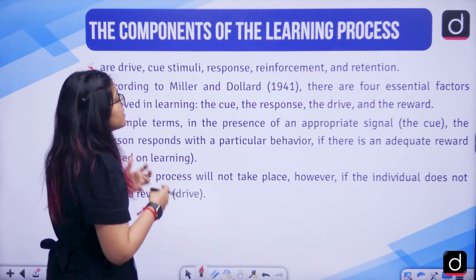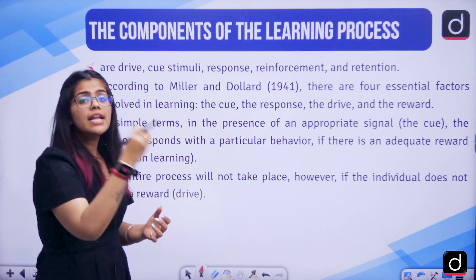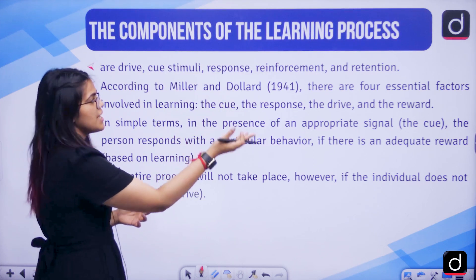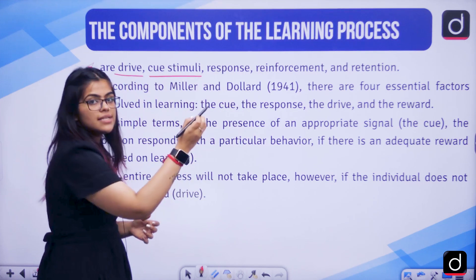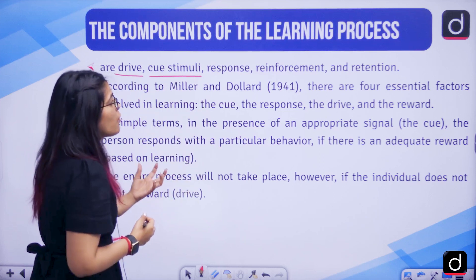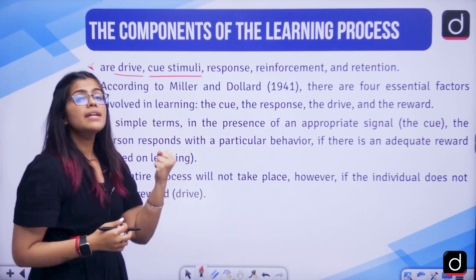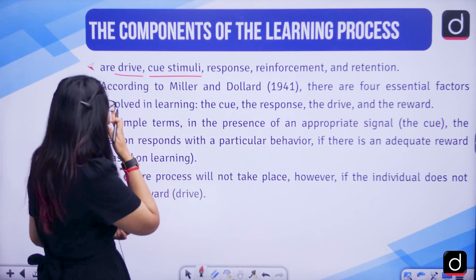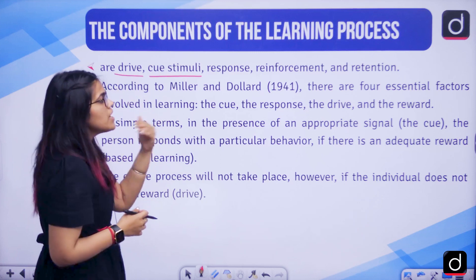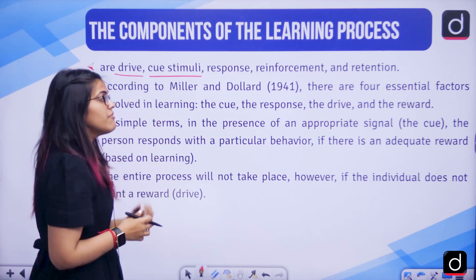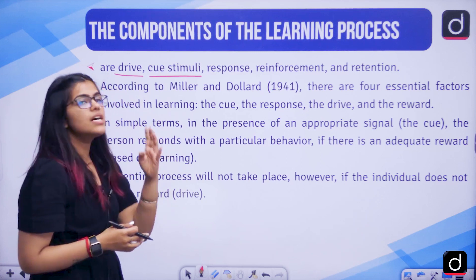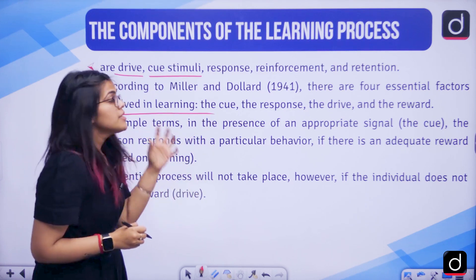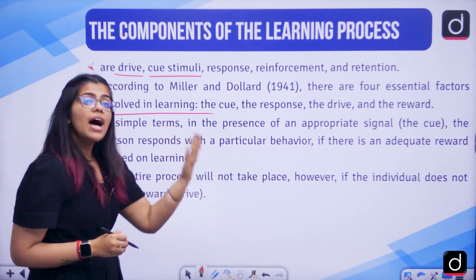There are certain processes and components of learning. The components of the learning process are drive, cue (the stimulus), response, reinforcement, and retention. According to Miller and Donald in 1941, there are four essential factors involved in learning: the cue, the response, the drive, and the reward. You always work for the reward.